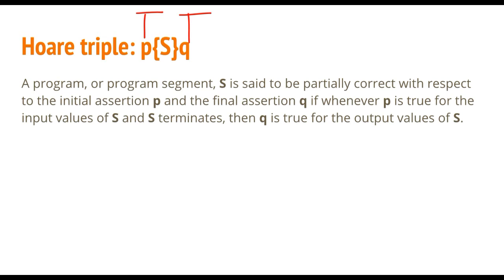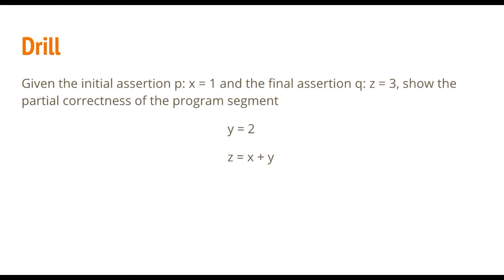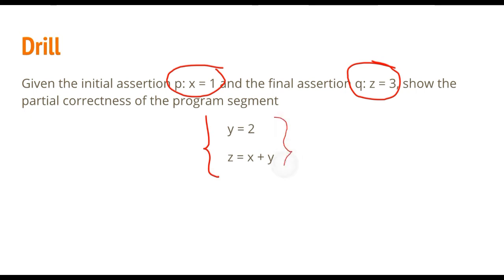We can have a specific example for this scenario. Given the initial assertion P: x equals 1, and the final assertion Q: z equals 3, show the partial correctness of the program segment S. For the Hoare triple, P with code segment S should imply Q.